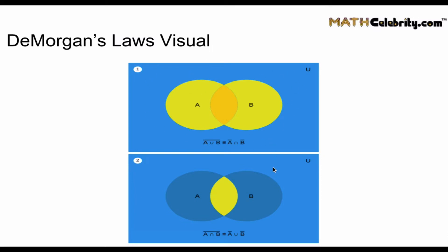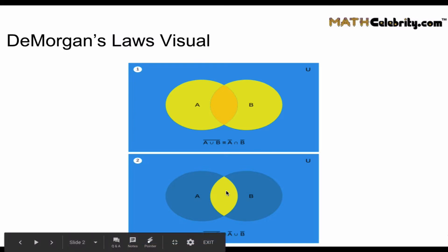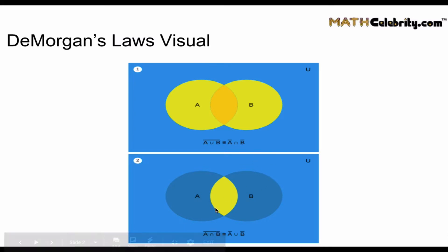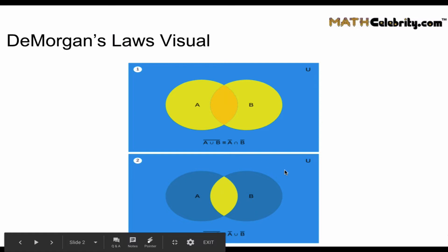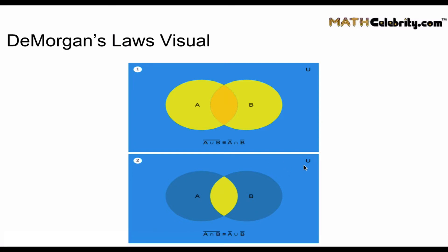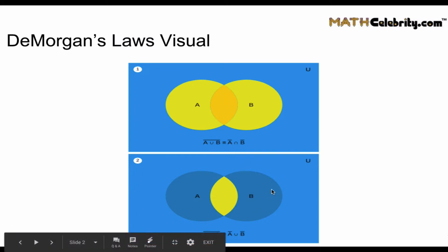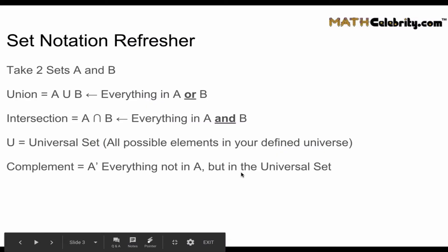For DeMorgan's Law 2, the intersection of A and B is the overlapping piece. The complement of that intersection is everything except the yellow overlap. The other way to look at it: the complement of A — everything not in A, which is this piece of B and all the blue — union with the complement of B, which is this piece of A and all the blue. When you join those two pieces together, you get the combined yellow area.